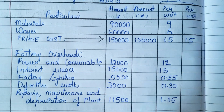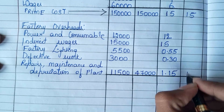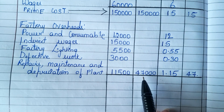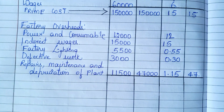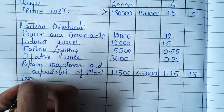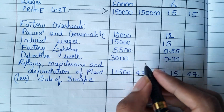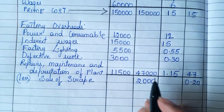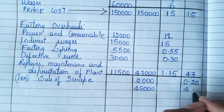Now, add all of these — the total factory overheads come to 47,000, and for a single unit it is 47 rupees. Before adding, there is one more item in the question: sale proceeds of scrap. So write 'less: sale of scrap' — it is 2,000. For one unit, divide by 10,000 to get 0.20. When you subtract, you get 45,000 and 45 rupees per unit as net factory overheads.